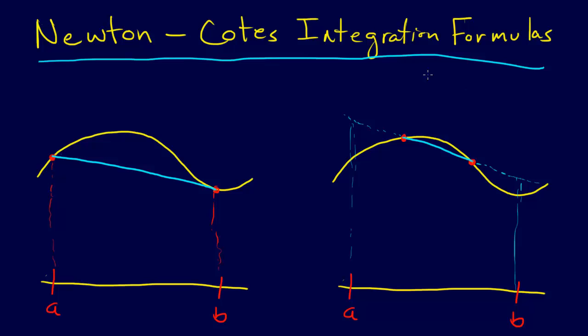The Newton-Cotes integration formulas are based on the idea that we have some function we're trying to approximate, and we have the values of that function at certain points. The idea behind the Newton-Cotes method is that we fit some simpler function to that data and then integrate over that simple function.